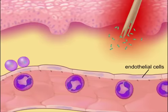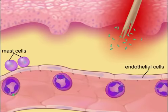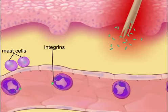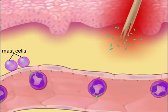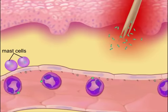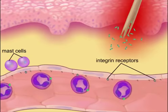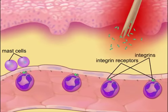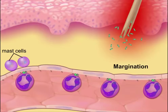As the neutrophils roll along the endothelium, they encounter chemicals that activate integrins, which are adhesion receptors on their surfaces. These integrins then tightly attach to adhesion receptor molecules on the endothelial cells, causing the neutrophils to stick to the endothelium and stop rolling. This accumulation of neutrophils along the walls of the capillary is referred to as margination.